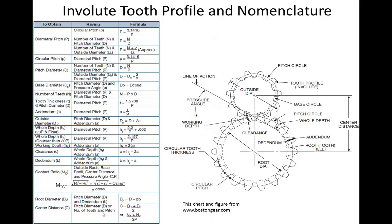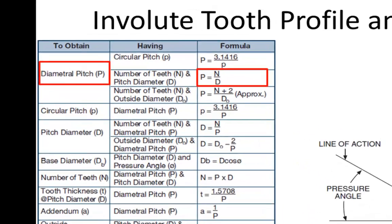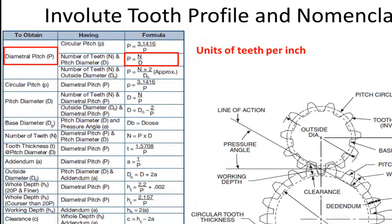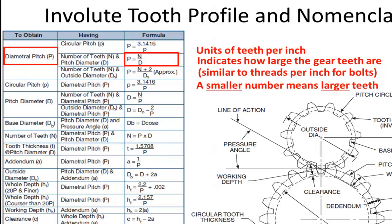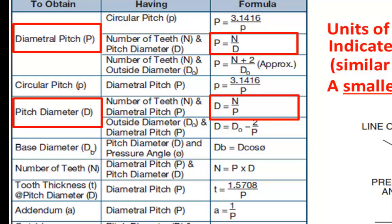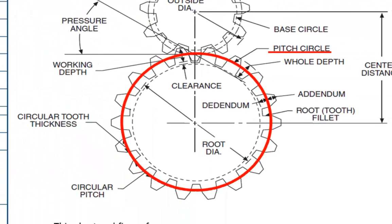Here is a page from your brain book that summarizes the main parameters of a typical spur gear. The first parameter listed is the diametral pitch, which is calculated by dividing the number of teeth by the diameter — diametral pitch is in units of teeth per inch and indicates how large the gear teeth are. It is a similar parameter to threads per inch for bolts; a smaller number means larger teeth. The pitch diameter is another important parameter — it is the diameter of the pitch circle, which refers to the circle where the gear teeth mesh together.